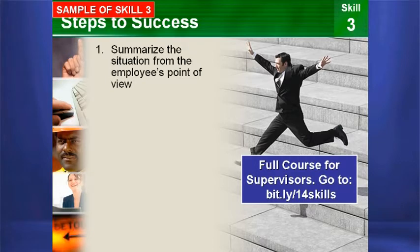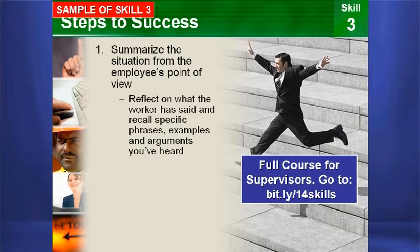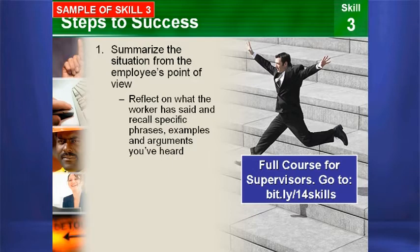Step 1: Summarize the situation from the employee's point of view. Reflect on what the worker has said about the issue at hand. Recall specific phrases, examples, and arguments you've heard. That way, you can begin the meeting by saying, 'As you know, we've spoken many times about the issue of your tardiness, poor attitude, and so forth. You've told me that...' — and then you summarize what the employee has said.